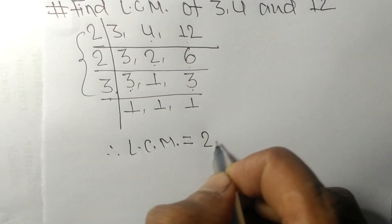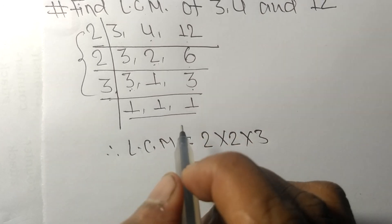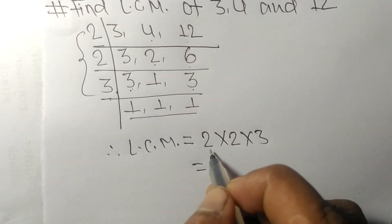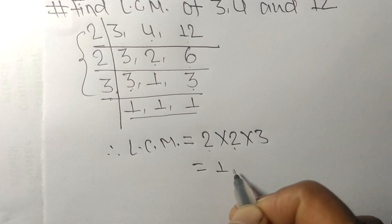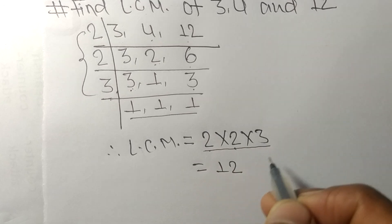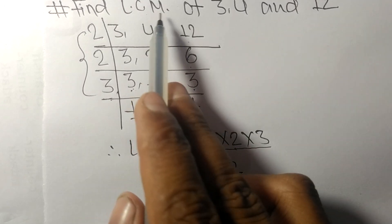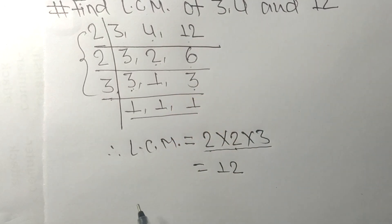The LCM is equal to the product of the divisors from this side: 2 times 2 times 3. The remaining 1s can be neglected. 2 times 2 means 4, and 4 times 3 means 12. So by multiplying all these numbers we get 12. Therefore, 12 is the LCM of 3, 4, and 12. Thanks for watching.